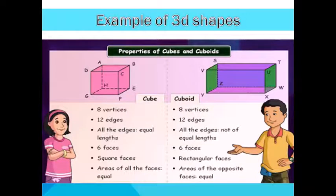In a cuboid, there are 8 vertices, 12 edges, all edges not of equal length, 6 rectangular faces, and the area of opposite faces is equal.